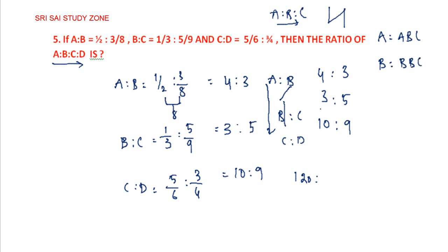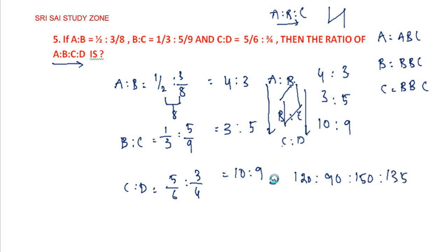3 times 3 is 9, 9 times 10 is 90. The C value: 3 times 5 is 15, 15 times 10 is 150. The last value: 3 times 5 is 15, 15 times 9 is 135. So this value is in the 15 table. Directly: A is 8 times, B is 6 times, C is 10 times, D is 9 times.